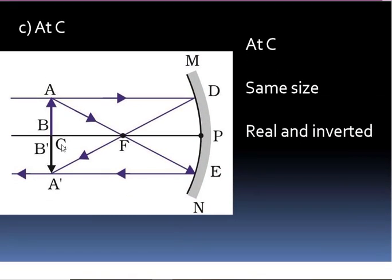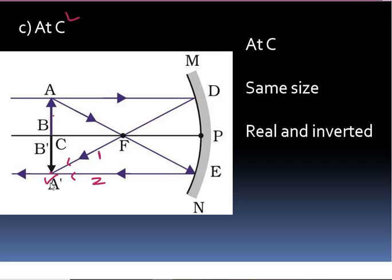Case 3: Object at C. One incident ray is parallel to the principal axis and reflects through the focus. A second incident ray passes through the focus and, applying rule 2, reflects parallel to the principal axis. These two reflected rays meet at C. The position of the image is also at C, same size as the object, and the image is real and inverted.